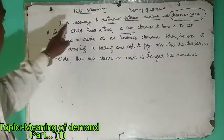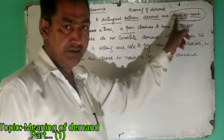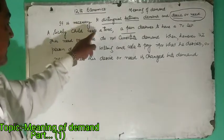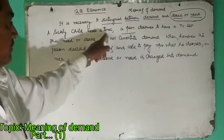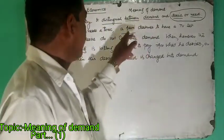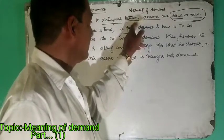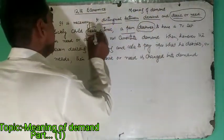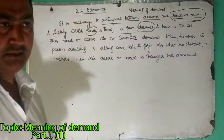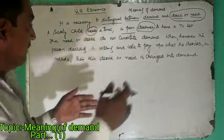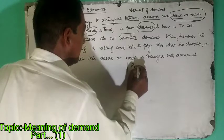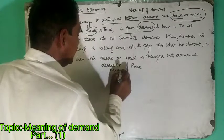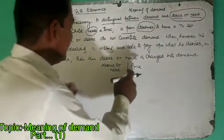It is necessary to distinguish between demand and desire or need. Suppose there is a child who is sick and needs a tonic, and another person who is a peon by profession desires to have a TV set. This desire and this need are not yet backed up by the willingness and ability to pay. There is a price part — desire or need is one side, and the price part is the other side.